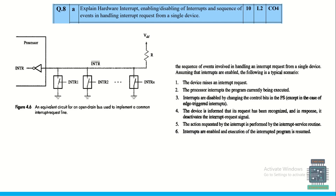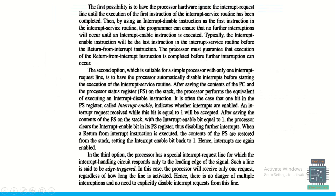To explain hardware interrupt, enabling/disabling of interrupts, and sequence of events for handling an interrupt request from a single device: a circuit diagram for an open-drain bus implements the common interrupt request line. The sequence of events for handling the interrupt is provided with steps, covering interrupt enable, interrupt disable, and related operations.